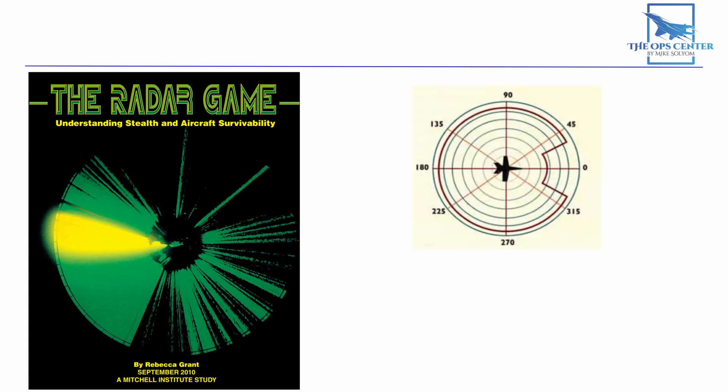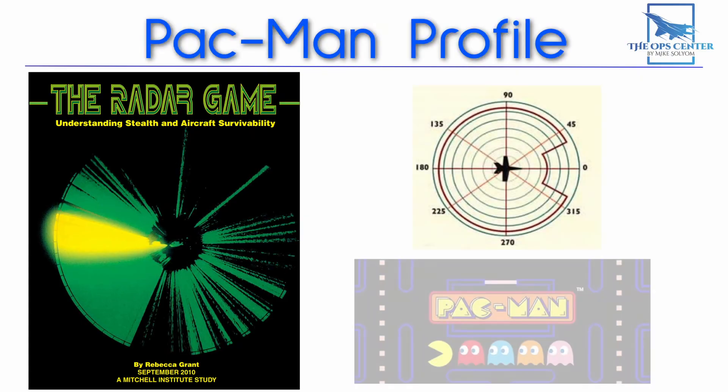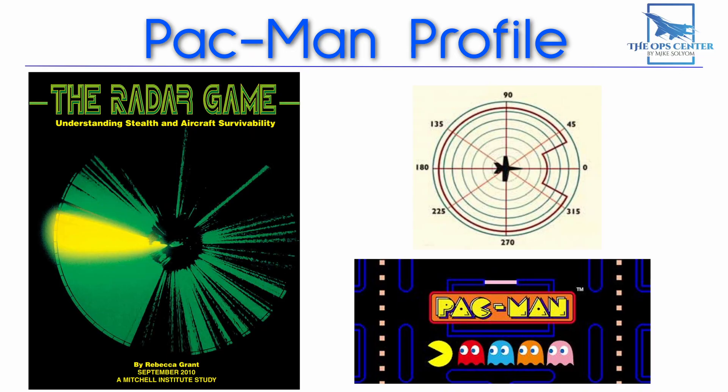One that focuses on RCS reduction from the front at the expense of all other directions is called the Pac-Man for obvious reasons. This is what you would expect from an aircraft where performance is a high priority along with stealth. So it would have prominent stabilizers and engine exhaust nozzles that are not protected from radar. These features would increase observability from the sides and rear. That's a cost the builders are willing to take for the added performance.